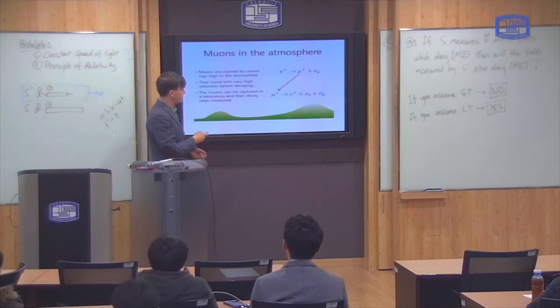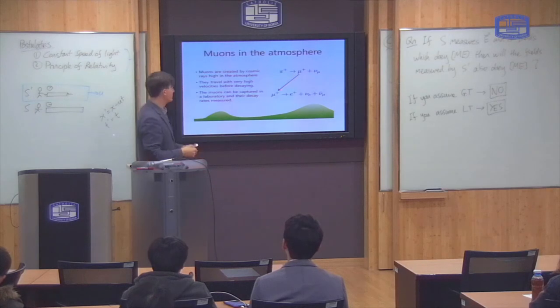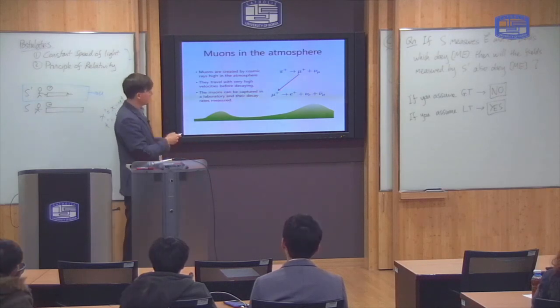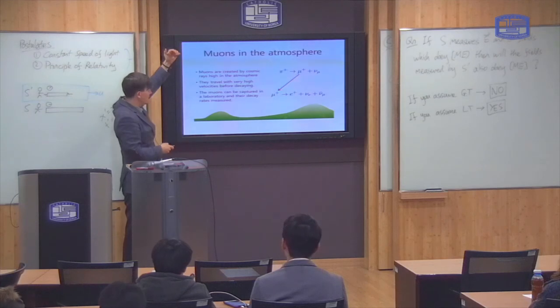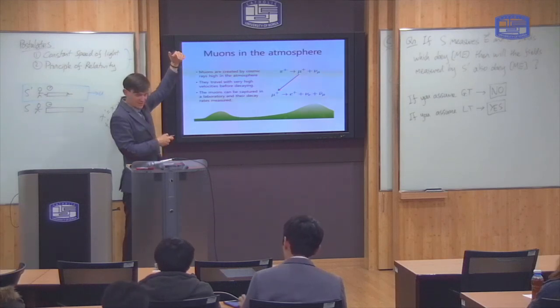And one of the kinds of particles that can be created is this mu plus, which is a positive muon. And these are the focus of this experiment. They're created high up in the atmosphere by these high energy cosmic rays. They travel very close to the speed of light.